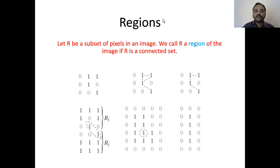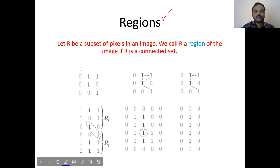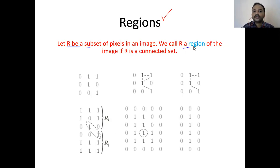Now we'll talk about regions. Let R be a subset of pixels in an image. We call R a region of the image if R is a connected set.